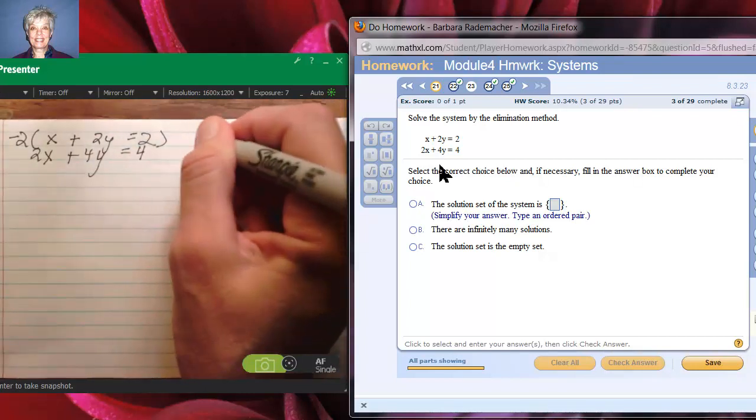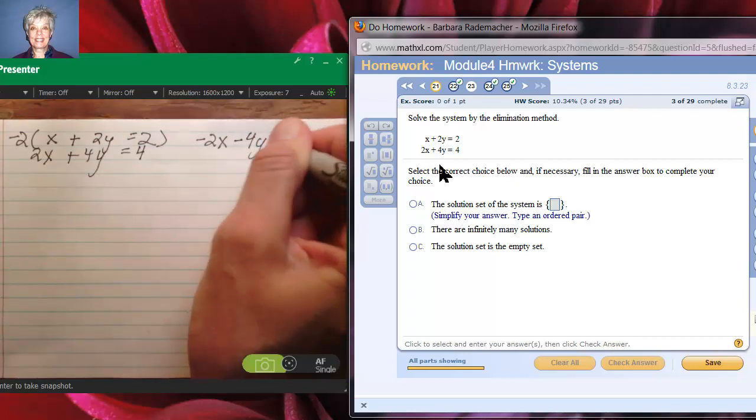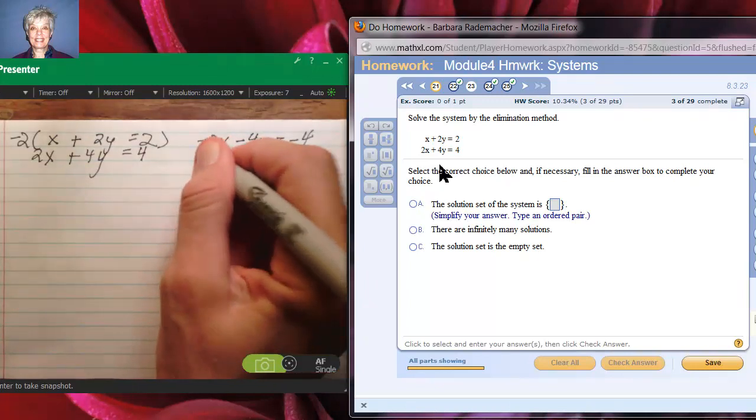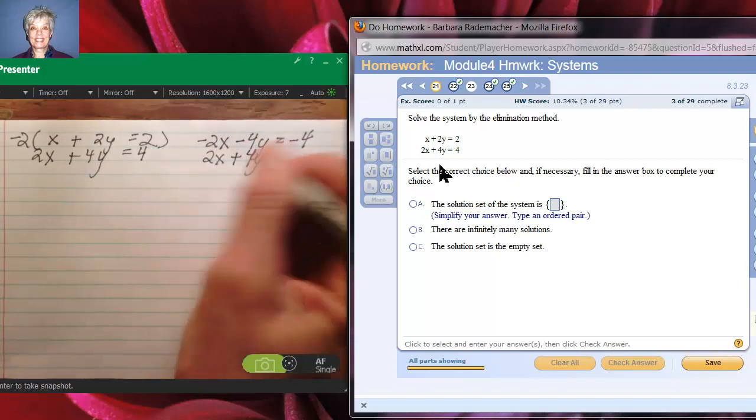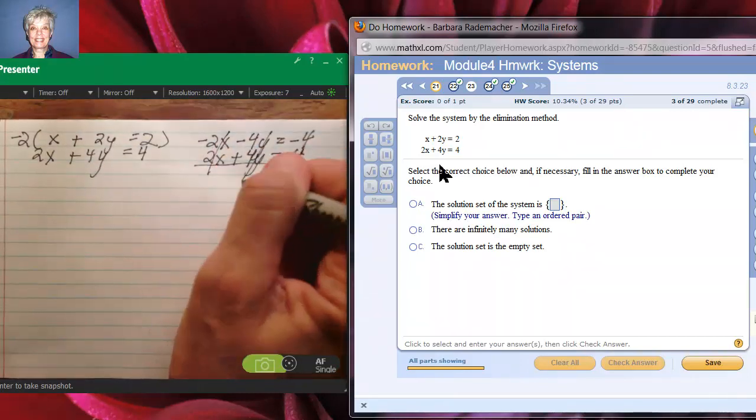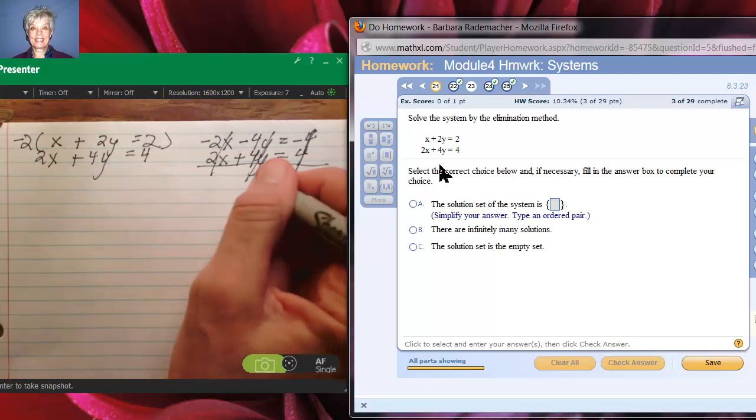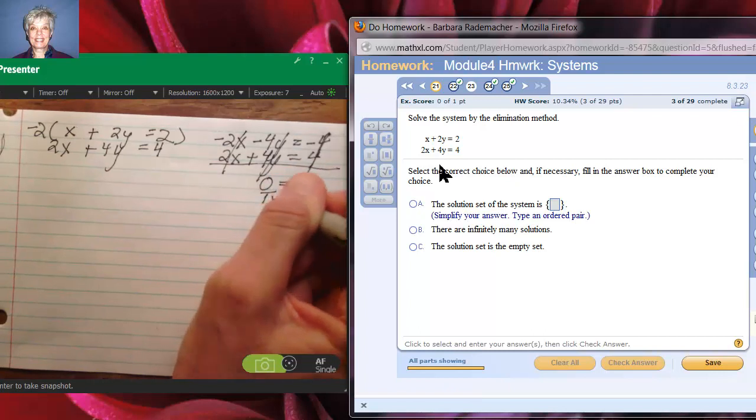What if I multiply the top equation by negative 2? I'll get negative 2x minus 4y equals negative 4. Meanwhile, the equation below it, line 2, is 2x plus 4y equals 4. This is going to do it for us because the x's zero out, the y's zero out, and the numbers zero out. So I'm left with zero equals zero, which is true.